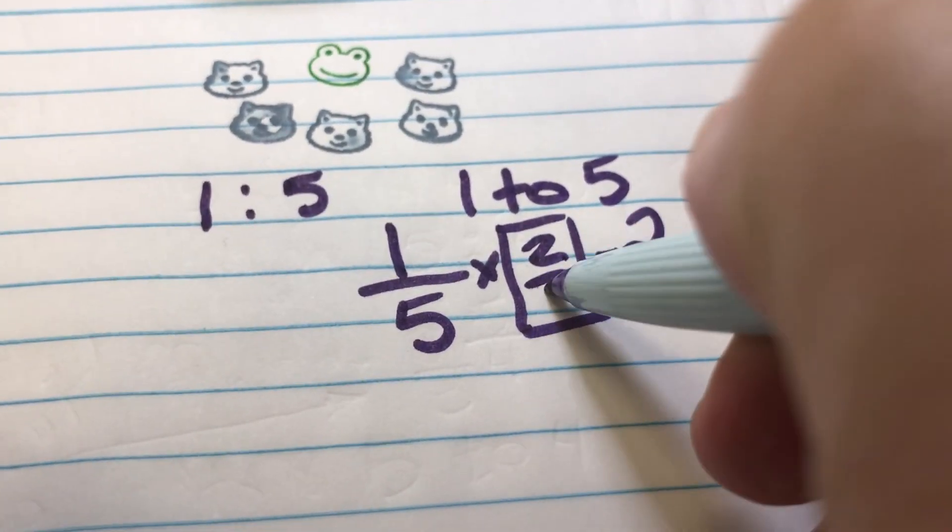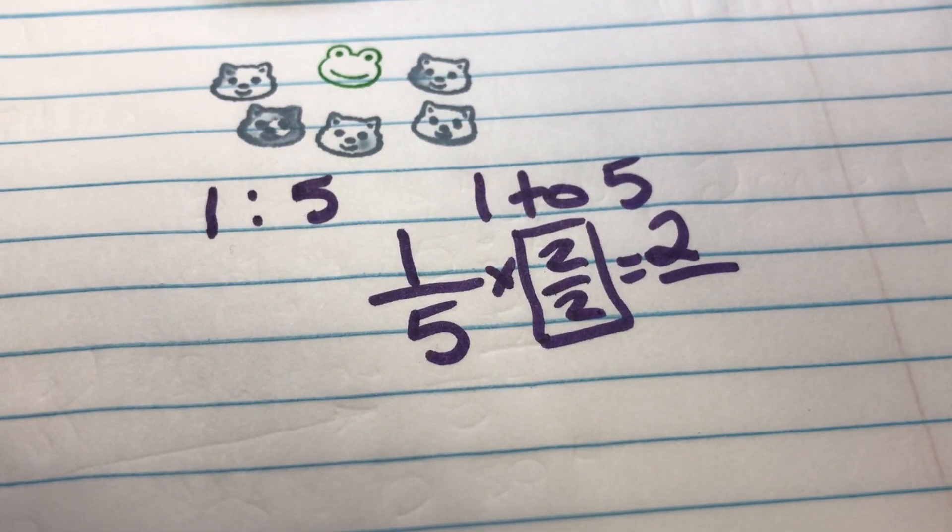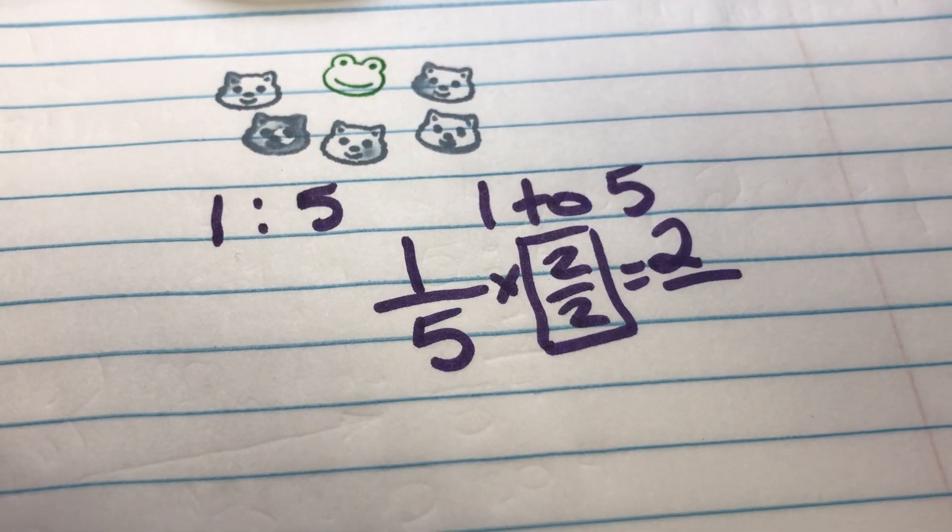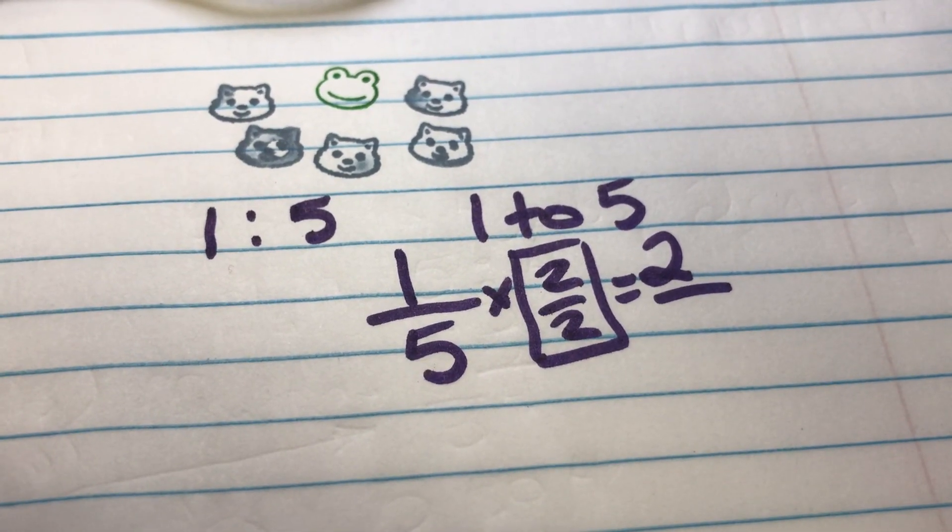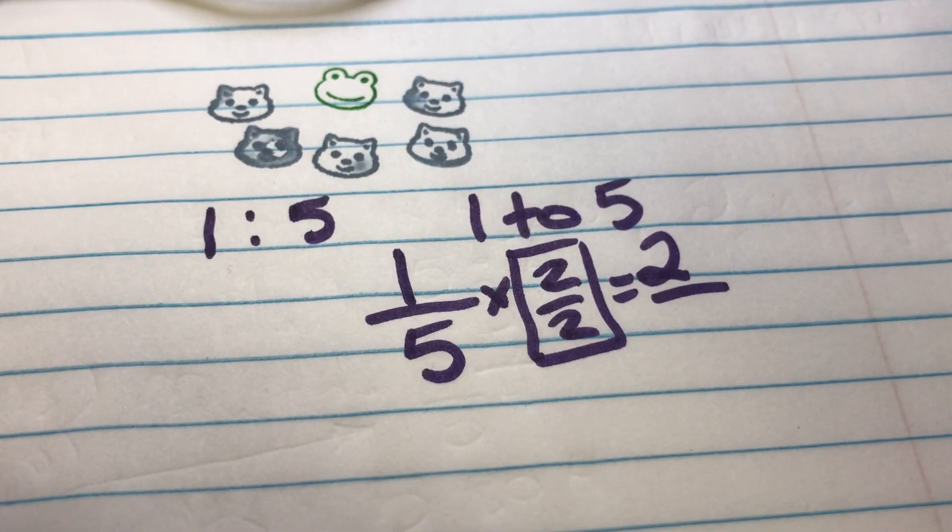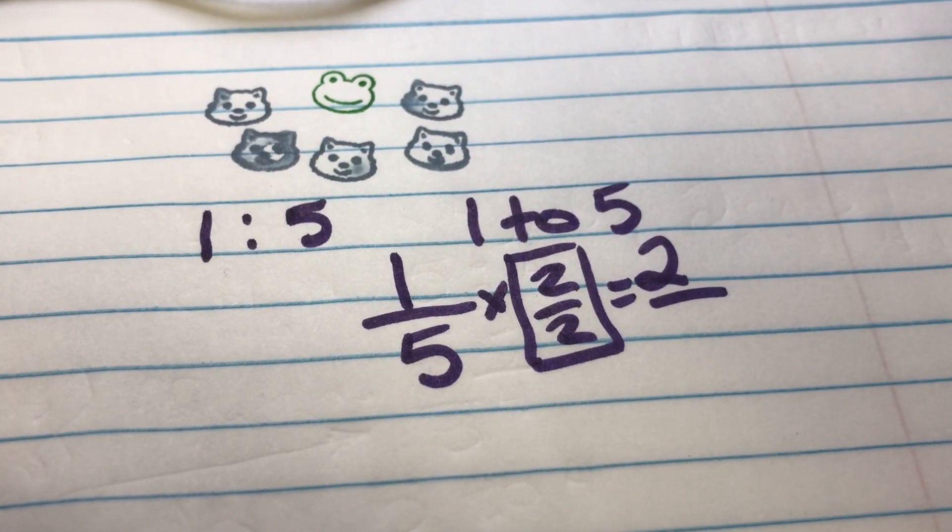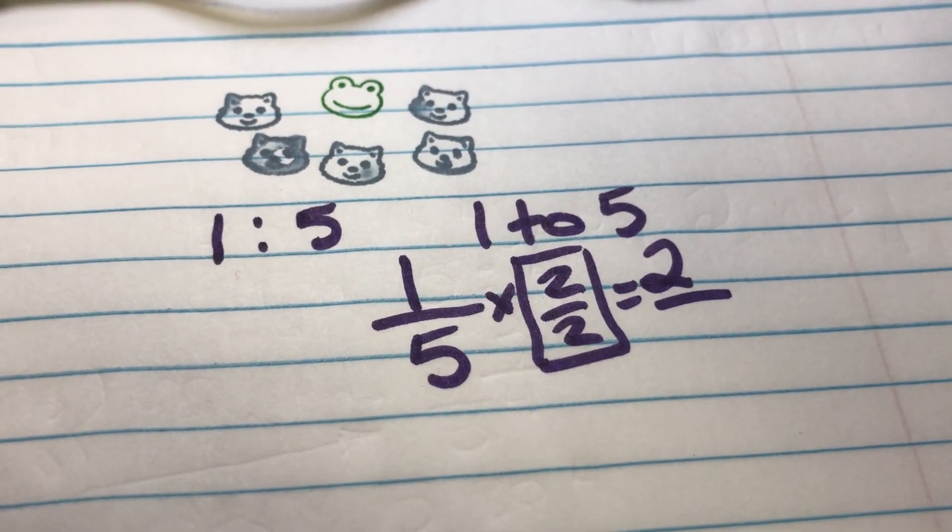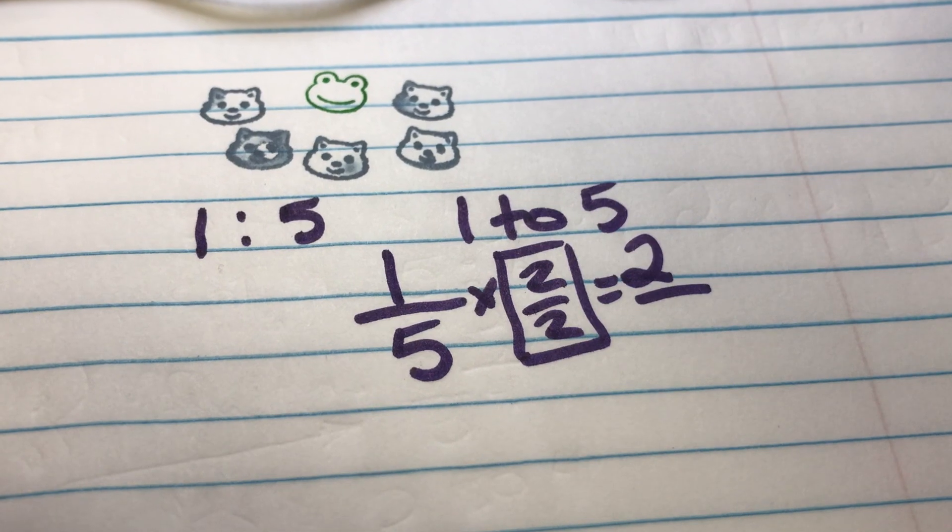So the number one looks like two over two. This is using the identity property of multiplication. We're really just multiplying this fraction or this ratio one to five by one. It stays the same. It may look different when we're done, but it stays the same.